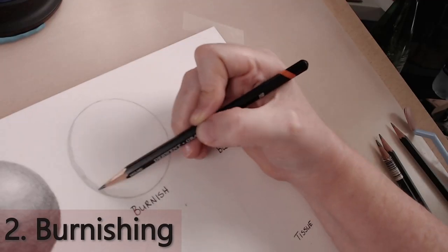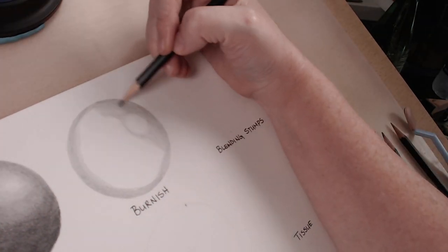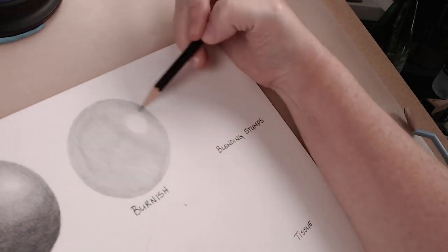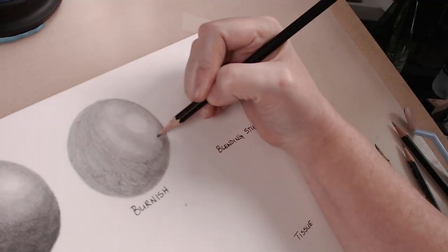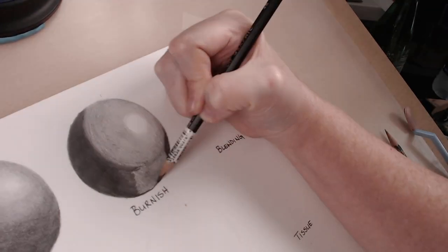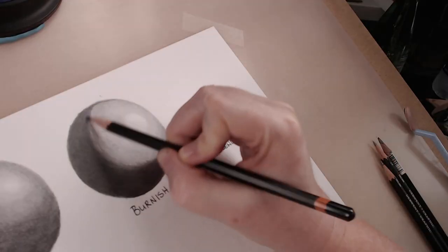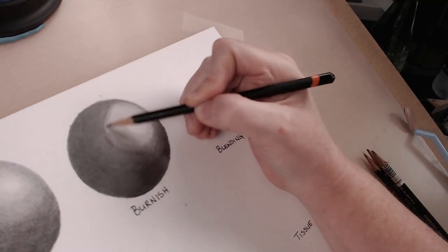The second way to blend would be burnishing. This is when you lay down your pencil in layers and then use firm pressure to create a smooth blend. You can typically skip the harder pencil and just jump in with an HB or softer if you choose. You can get very dark and saturated values with this method using say a 4B as I did here instead of needing to go to an 8B.